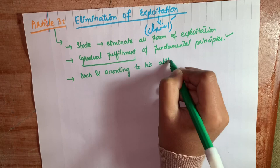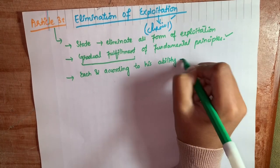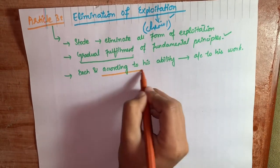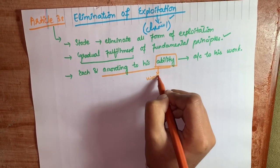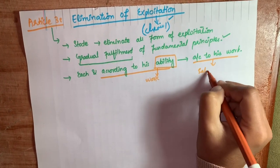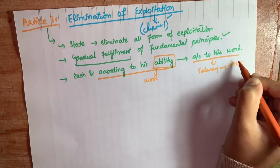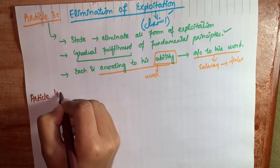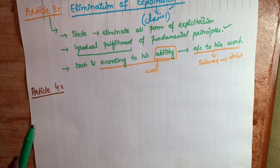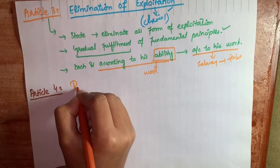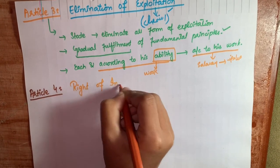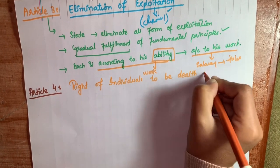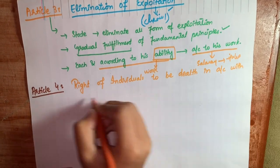Yani har fard se us ki ability ke according kaam liya jayega, aur har fard ko us ke kaam ke mutabiq muavza diya jayega. Yeh tha Article 3. Article 4 humein batata hai rule of law — the rights of individuals to be dealt with in accordance with law.